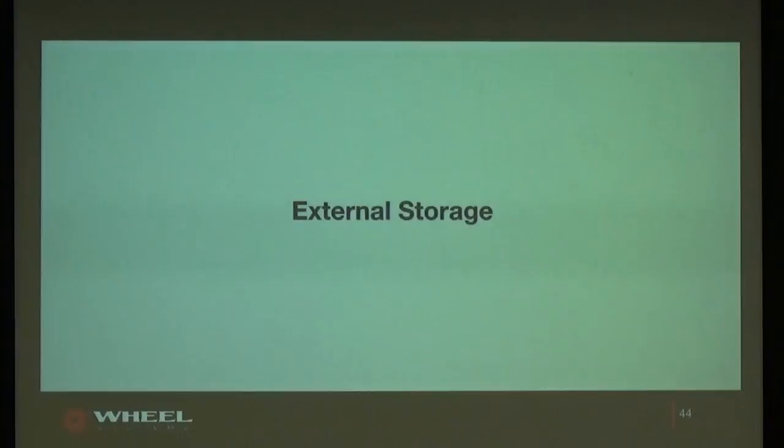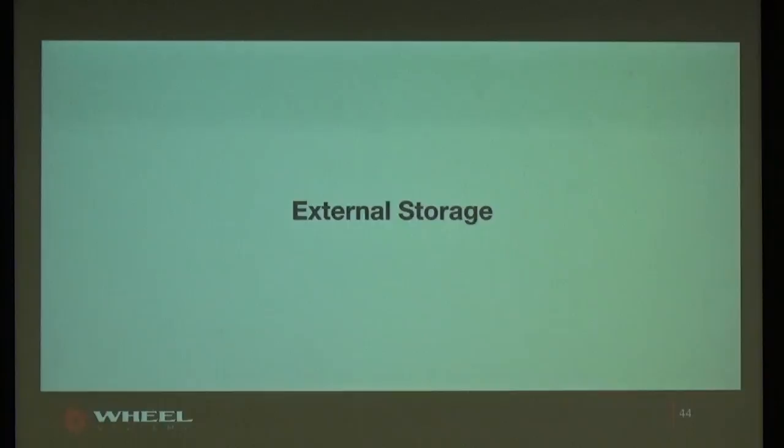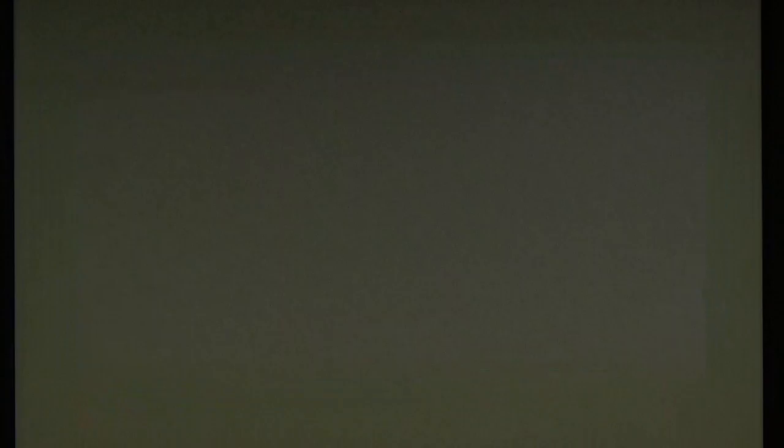There will always be customers for whom the storage you provide is not enough. In FreeBSD we have three methods for external storage that we considered: NFS, iSCSI, and SAN over Fibre Channel. The problem with NFS is that there is no encryption — every packet is sent in plain. In a hostile environment, somebody can see what we are writing to our storage, which is a big problem for a security appliance. There is also no real authorization in NFS, and most corporations are removing NFS from their infrastructure.